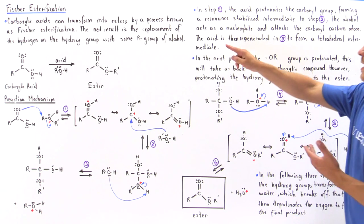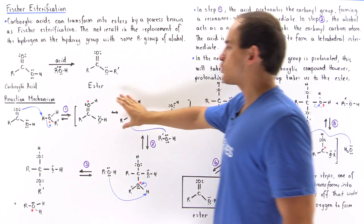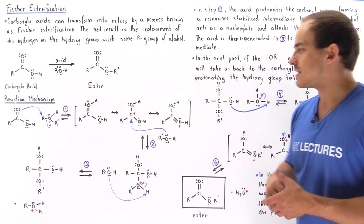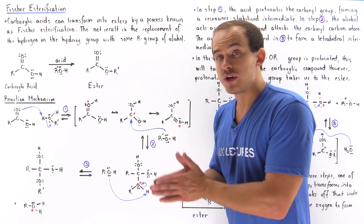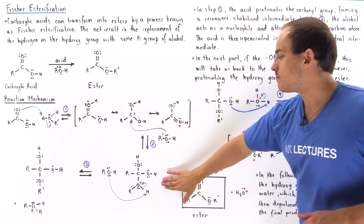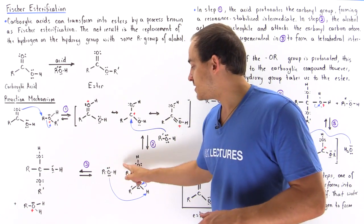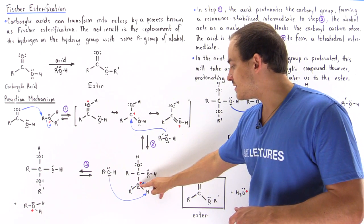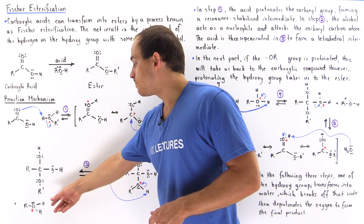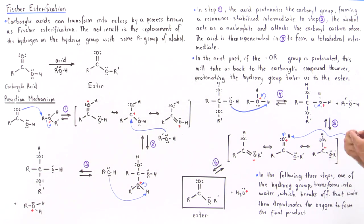So in step one, the acid protonates the carbonyl group, forming a resonance-stabilized intermediate as shown. In step two, the alcohol molecule acts as a nucleophile — a Lewis base — interacting with the Lewis acid carbon, and we form this molecule. In step three, the alcohol deprotonates the oxygen, regenerating our conjugate acid with the extra H, as well as forming our tetrahedral molecule.